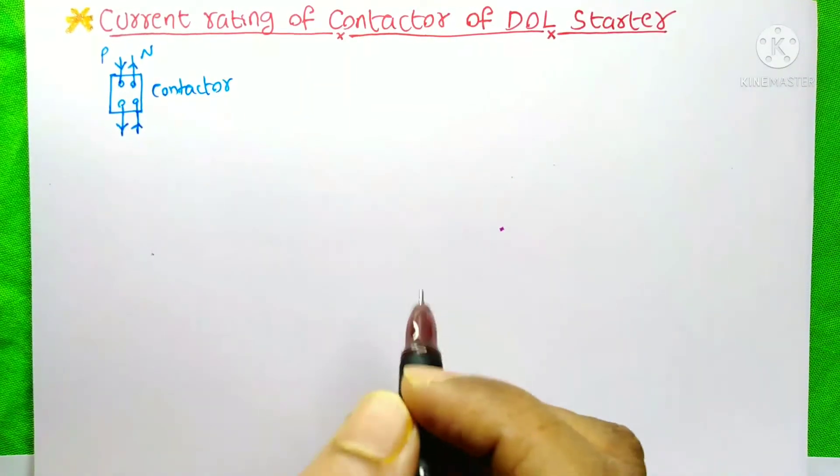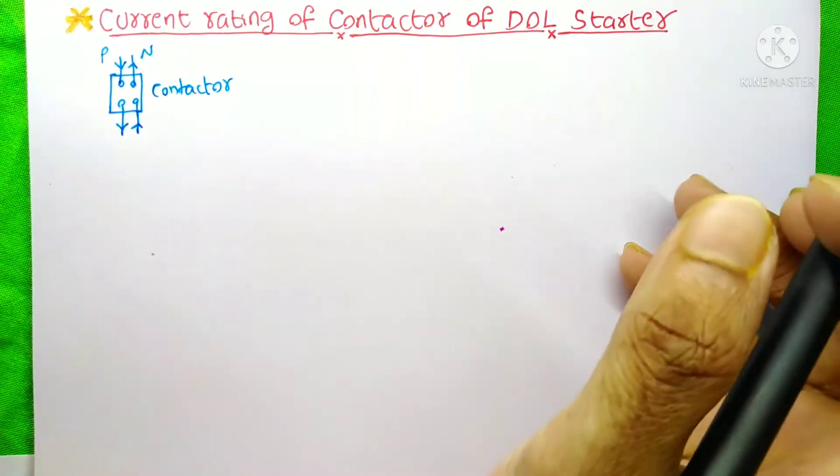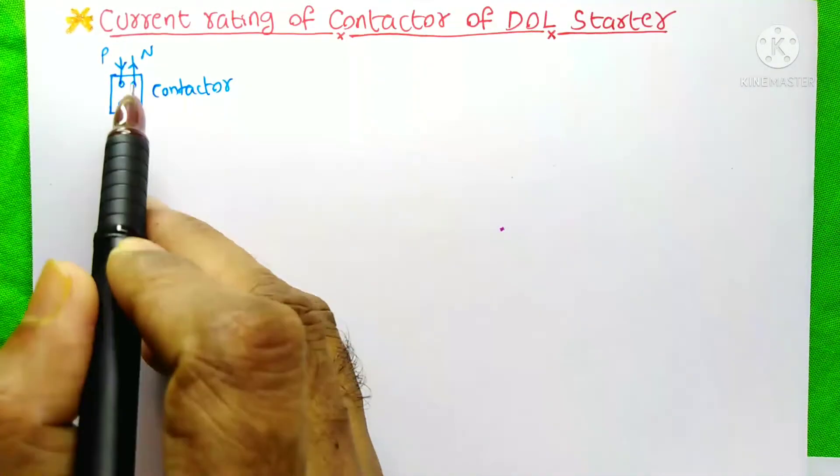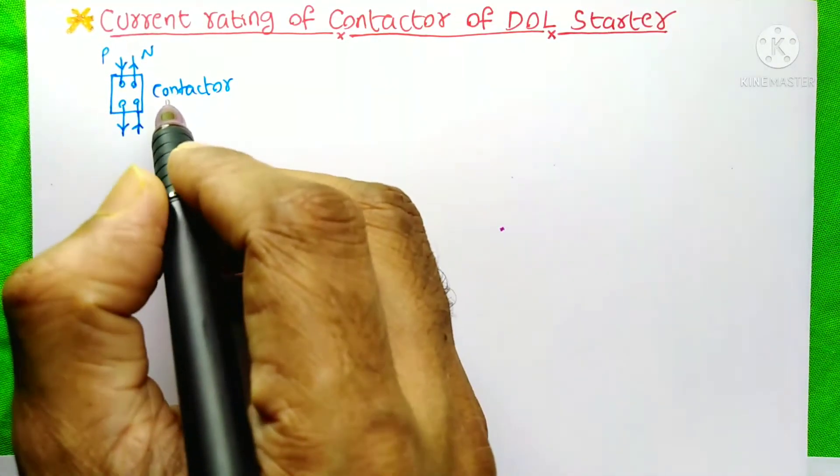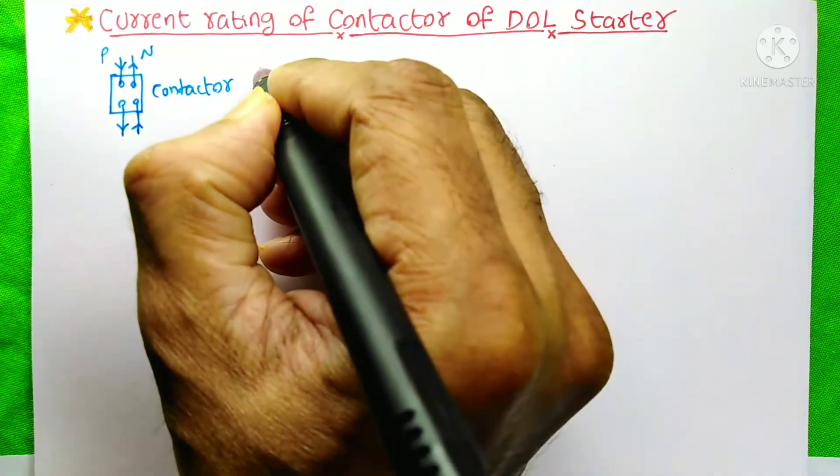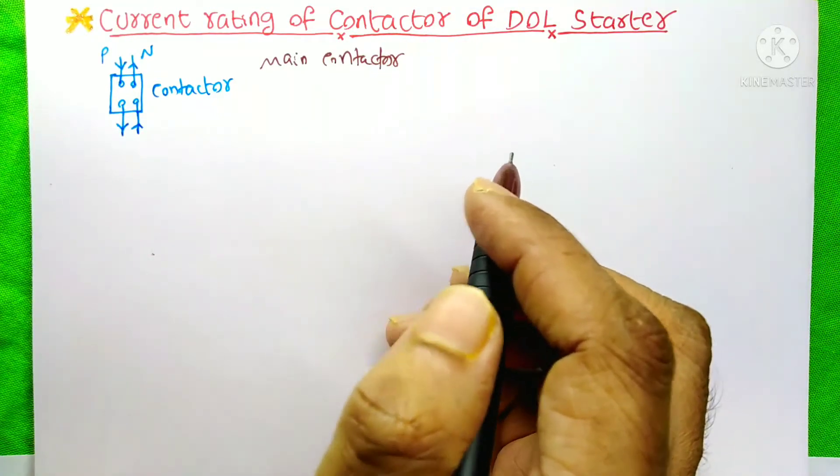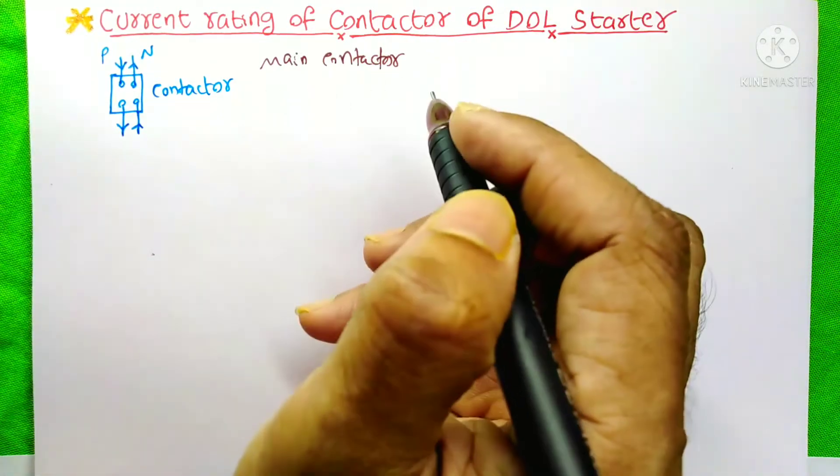Today you're going to learn how to calculate the current of a conductor of a DOL starter. We know that a DOL starter has only one conductor. We can call it a DOL conductor or main conductor. I am an electrical engineer. Please don't skip this video because it is very important.